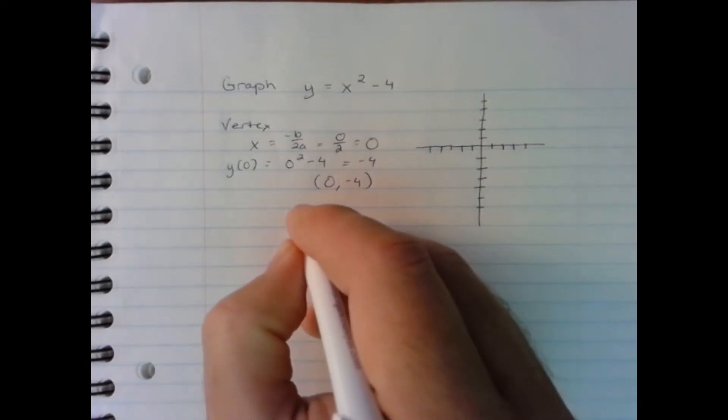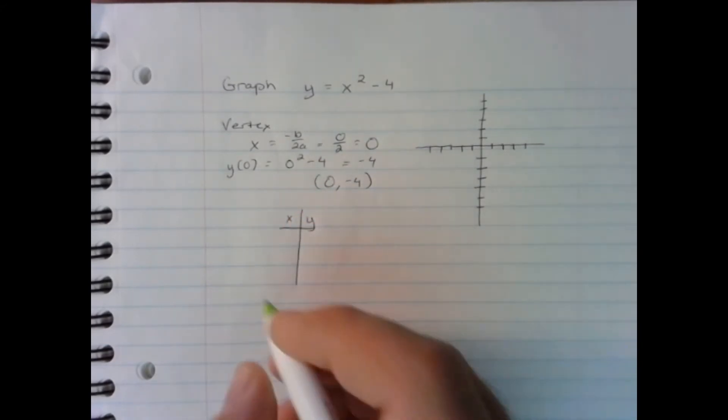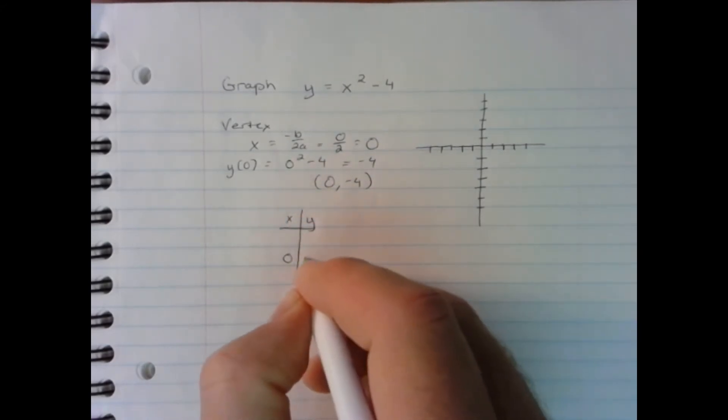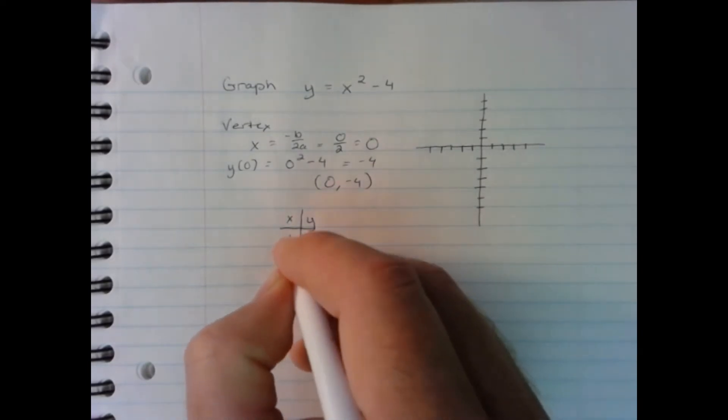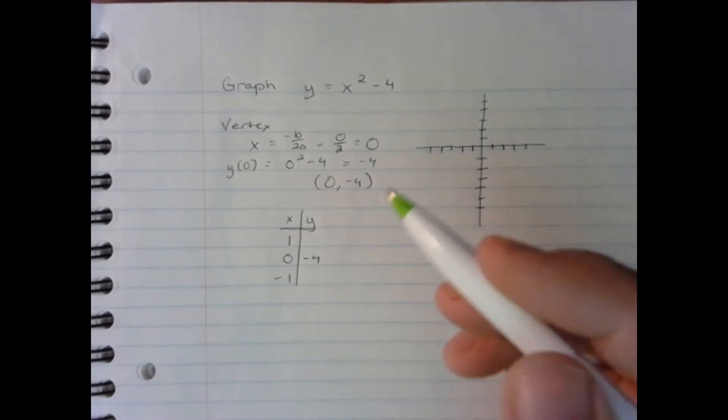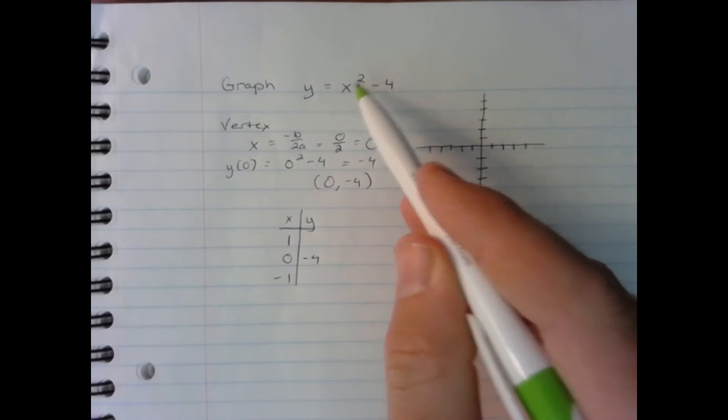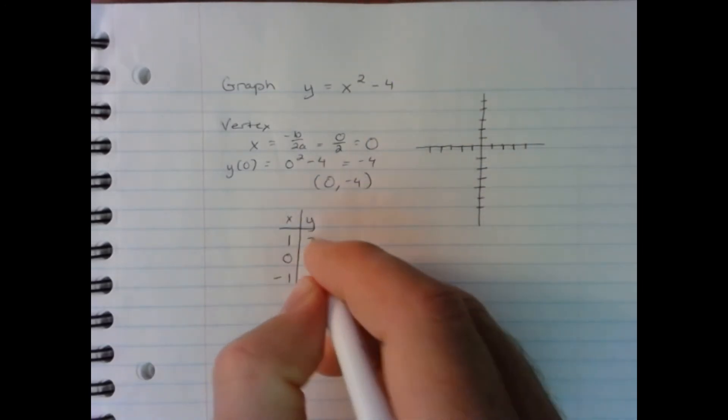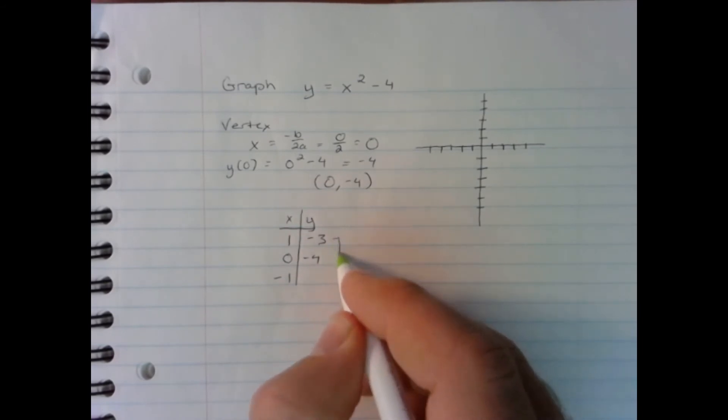Now I'm just going to make a quick little t-chart and put the vertex in the middle. And then I will also test 1 and negative 1 to find two points around it. When I plug in 1 to the function, 1 squared is 1. 1 minus 4 is negative 3. Because of symmetry, these have the same y values.